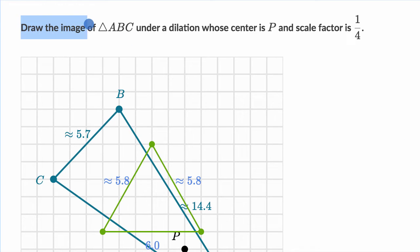We're told, draw the image of triangle ABC under a dilation whose center is P and scale factor is 1/4th.